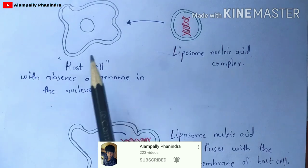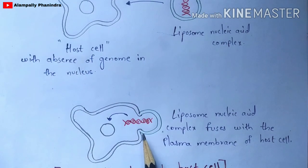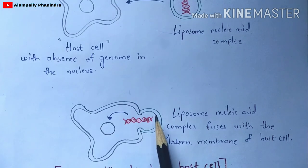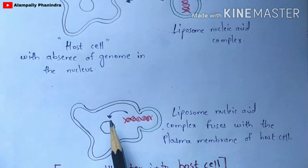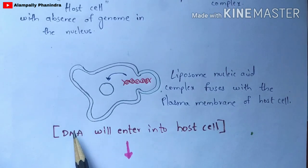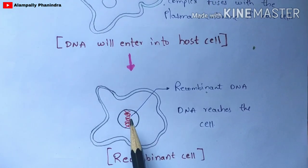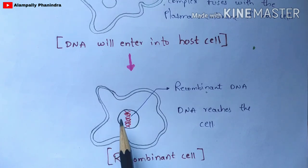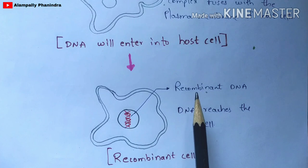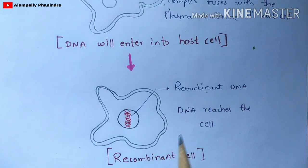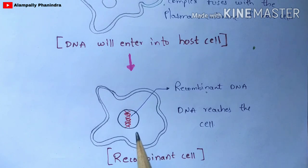When the liposome-nucleic acid complex interacts with the host cell, the cell membrane gets ruptured so that the nucleic acid present in the liposome enters into the host cell. Finally, the DNA travels from the liposome into the nucleus of the host cell. This DNA inside the host cell is now called recombinant DNA.